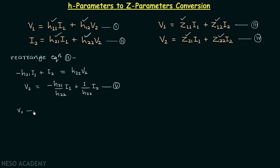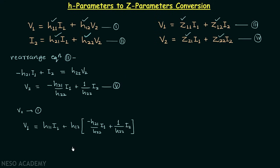Let's substitute V2 from equation five into equation one. This gives us V1 equal to H11·I1 plus H12 times the quantity minus H21 divided by H22 times I1 plus 1 over H22 times I2. Opening the bracket, we have H11·I1 minus H12·H21 divided by H22 times I1.